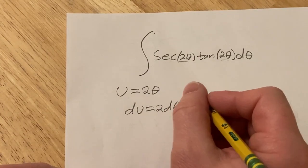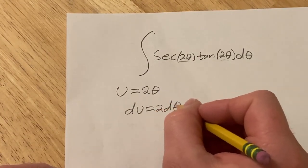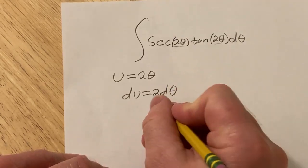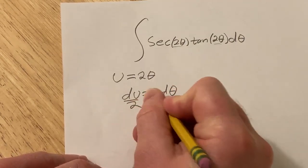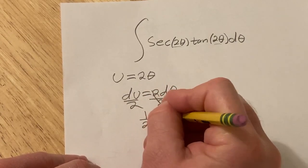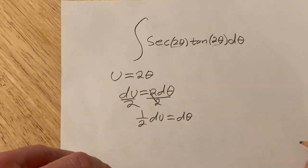All right, so now I want to make this look like what's here. So there's no 2 here, so we're going to divide both sides by 2. So we have 1 half du equals d theta.